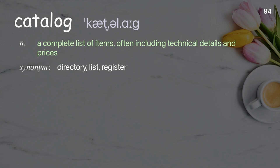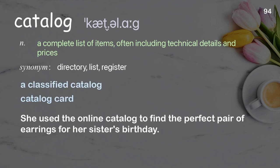Catalog: a complete list of items, often including technical details and prices. Examples: a classified catalogue, catalog card. She used the online catalogue to find the perfect pair of earrings for her sister's birthday.